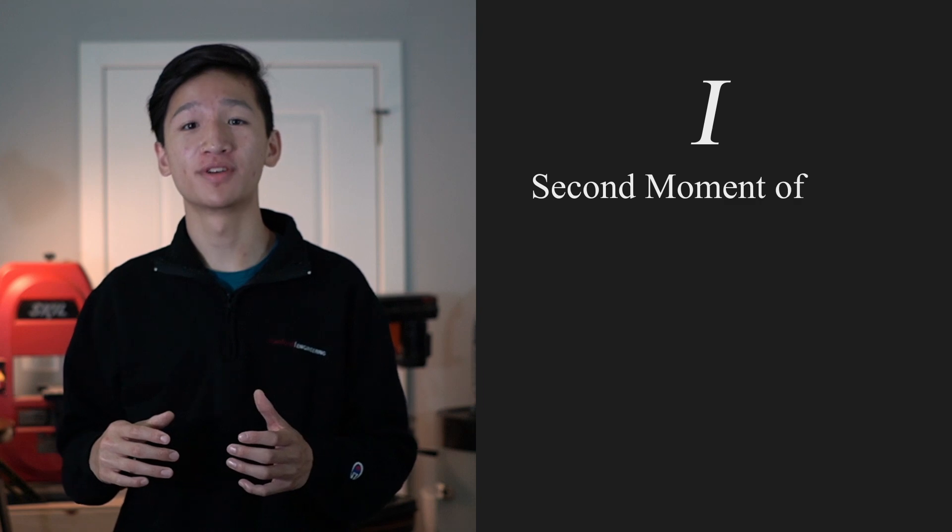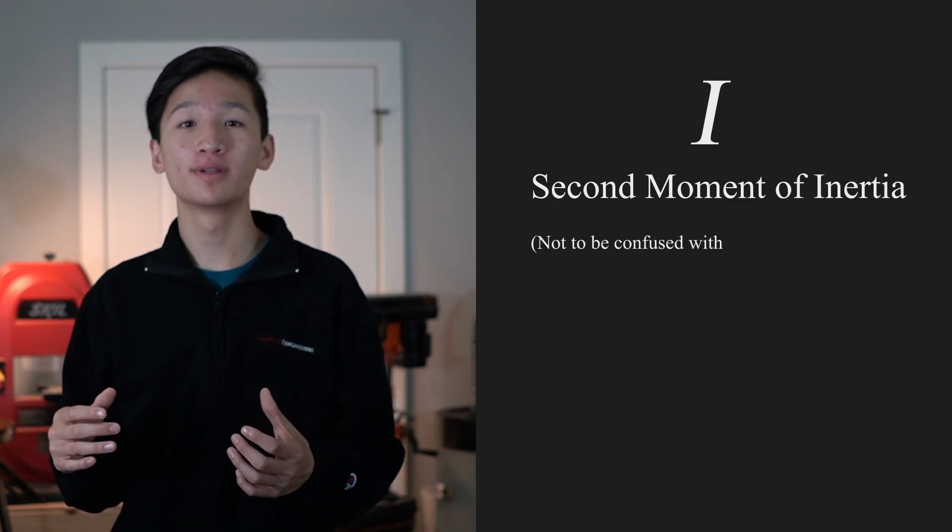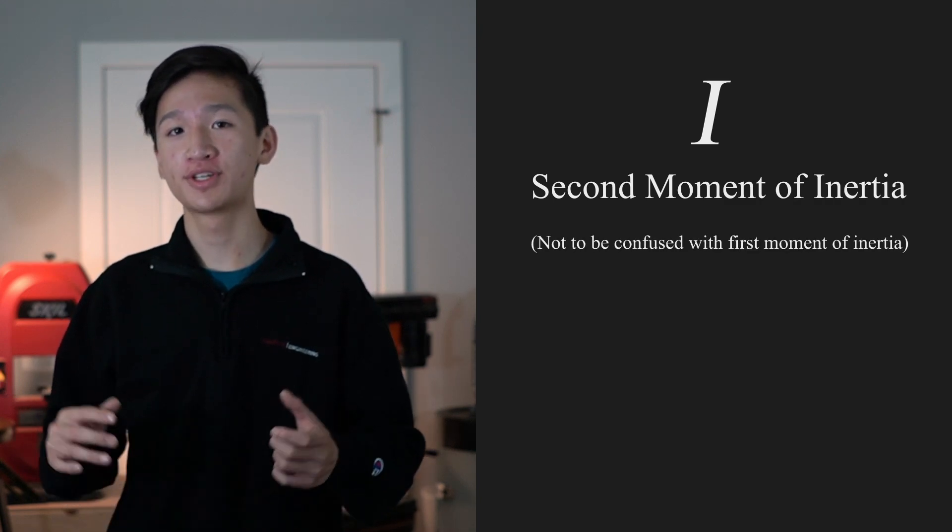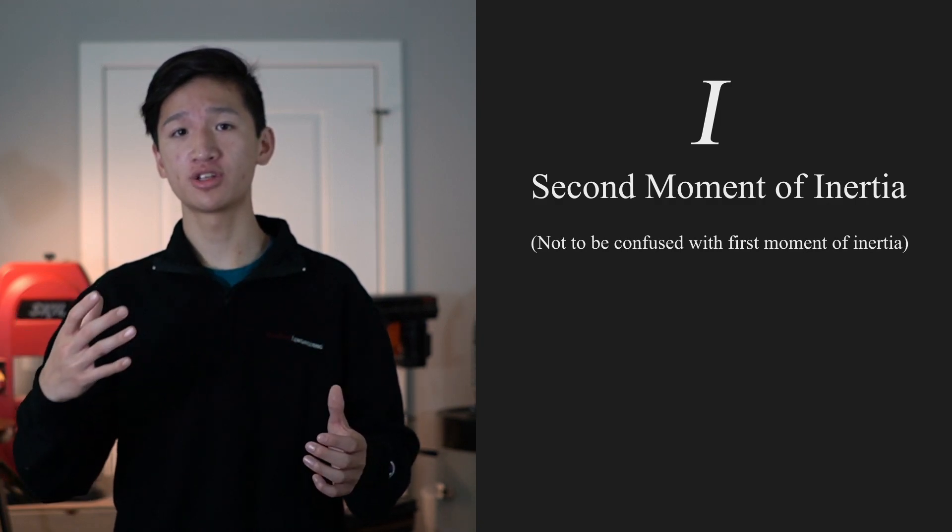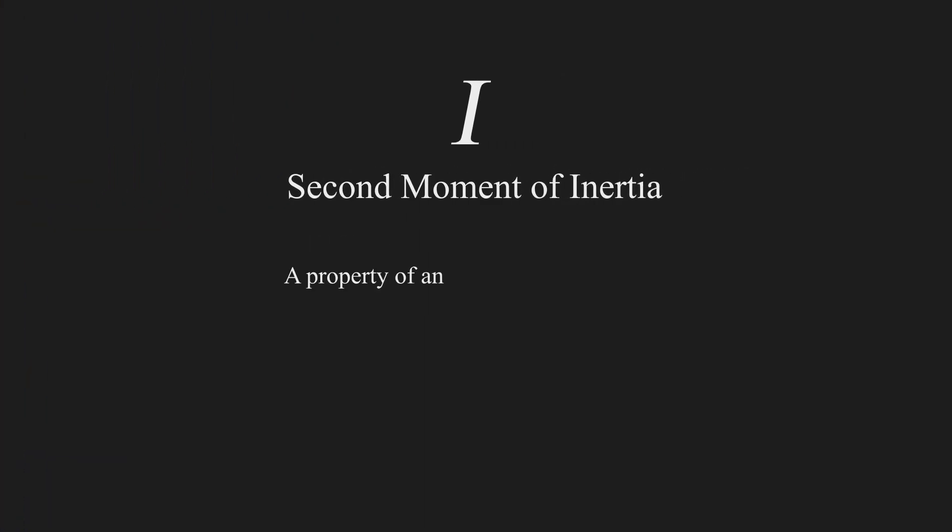I is our second moment of inertia. This isn't the more commonly known first moment of inertia, which is an object's resistance to rotation. Rather, it's a property of an object's cross-section that is used to calculate the resistance to bending.